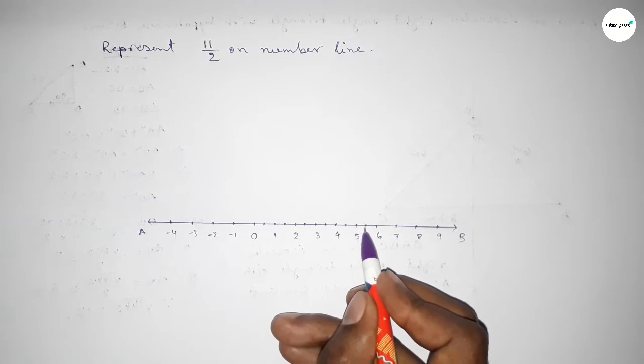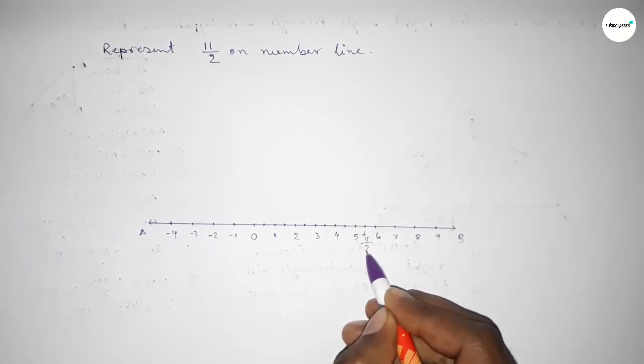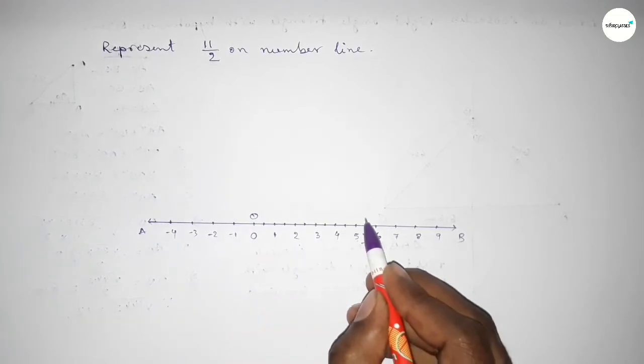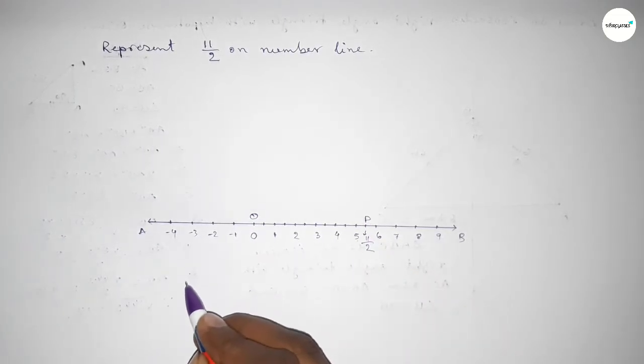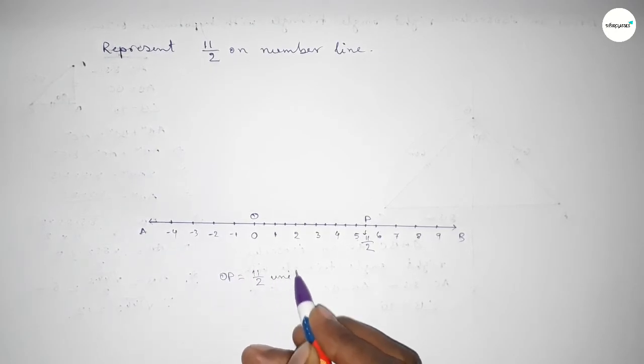8 over 2, 9 over 2, 10 over 2, and this is 11 over 2. So this is 11 over 2 on number line. Therefore, OP distance OP equals 11 over 2 unit.